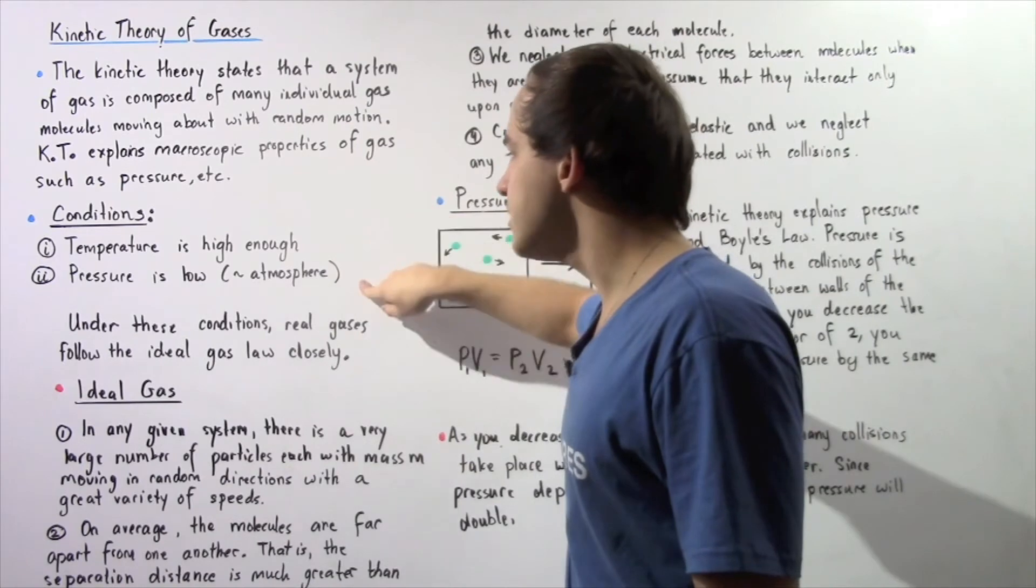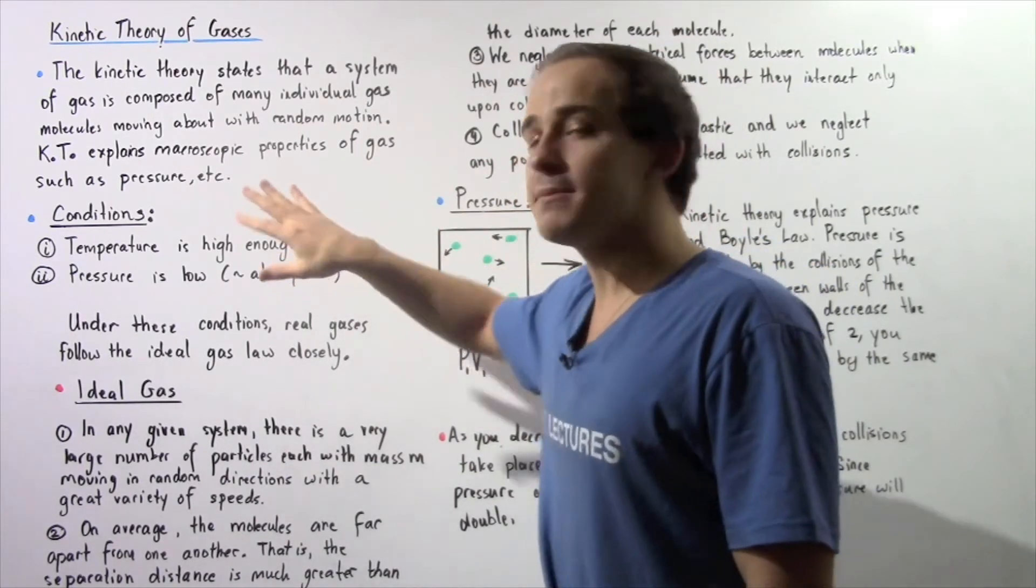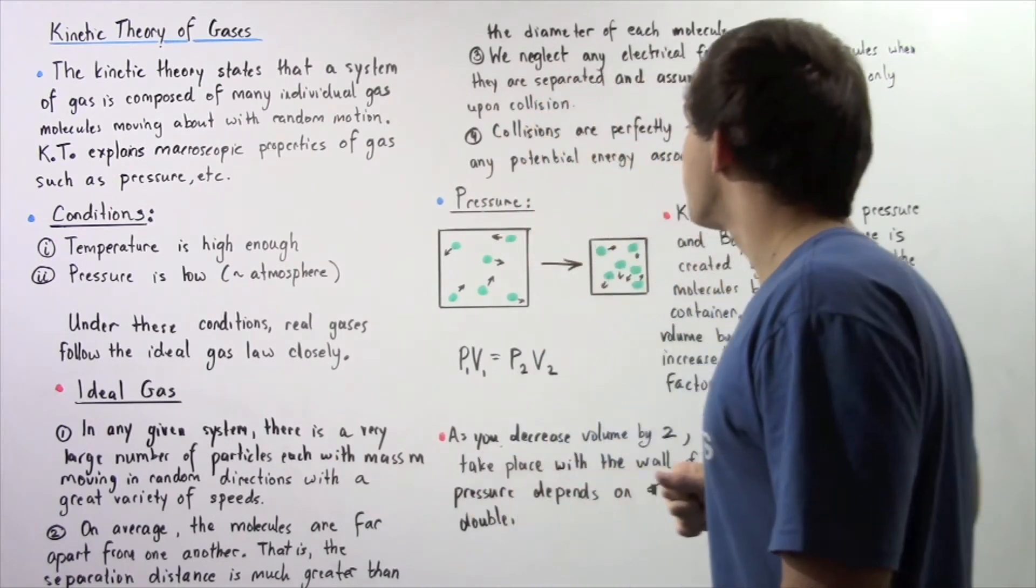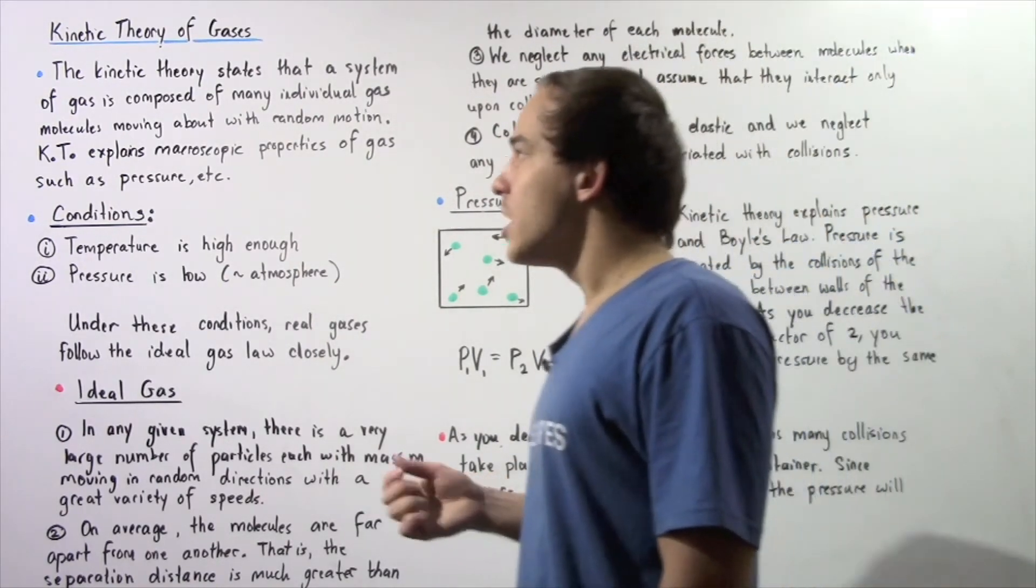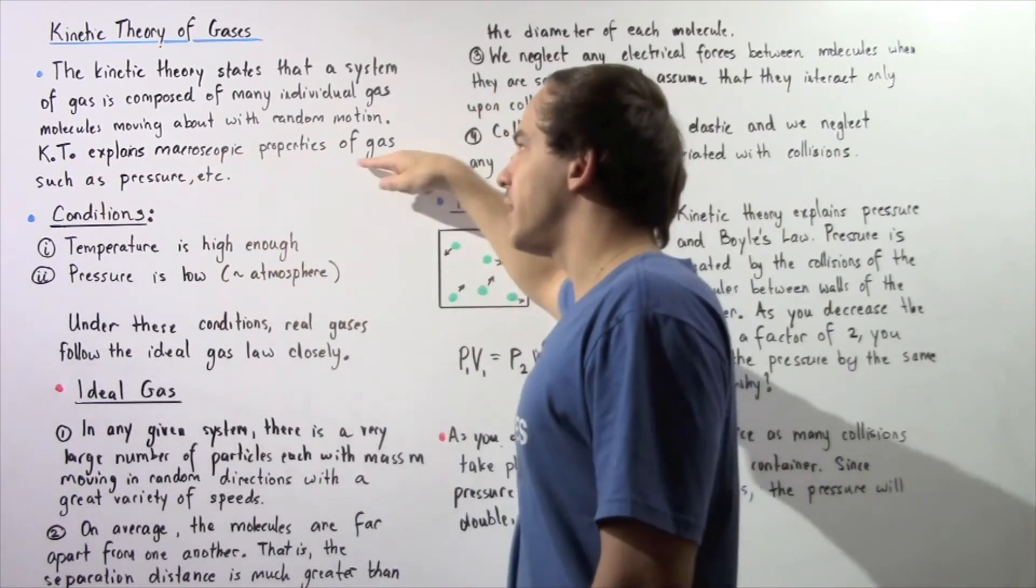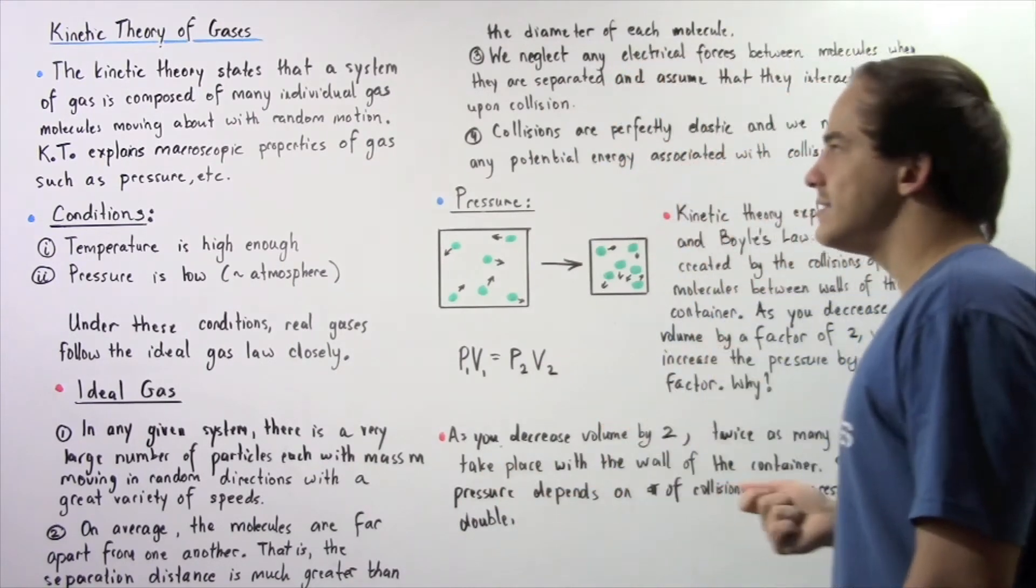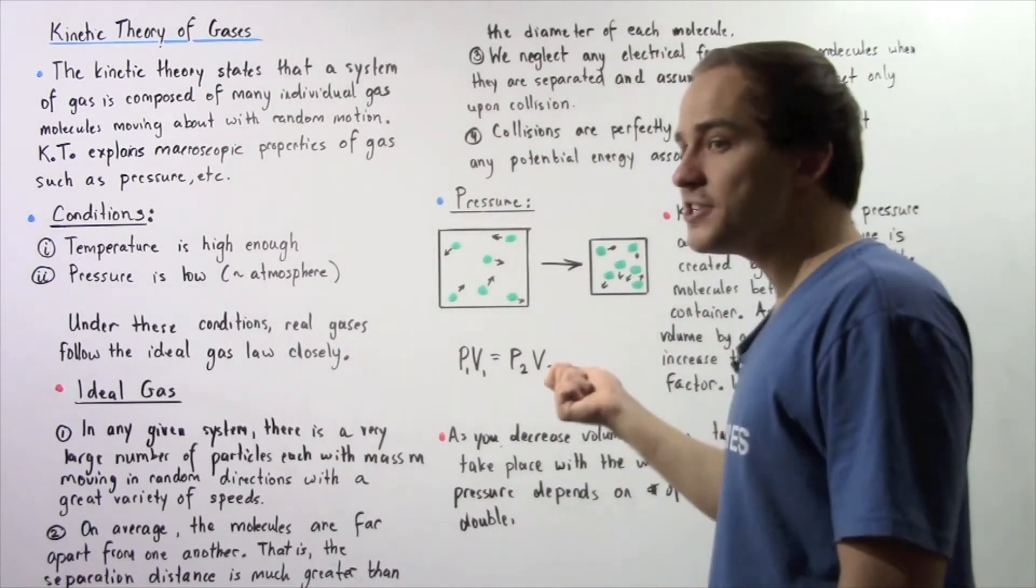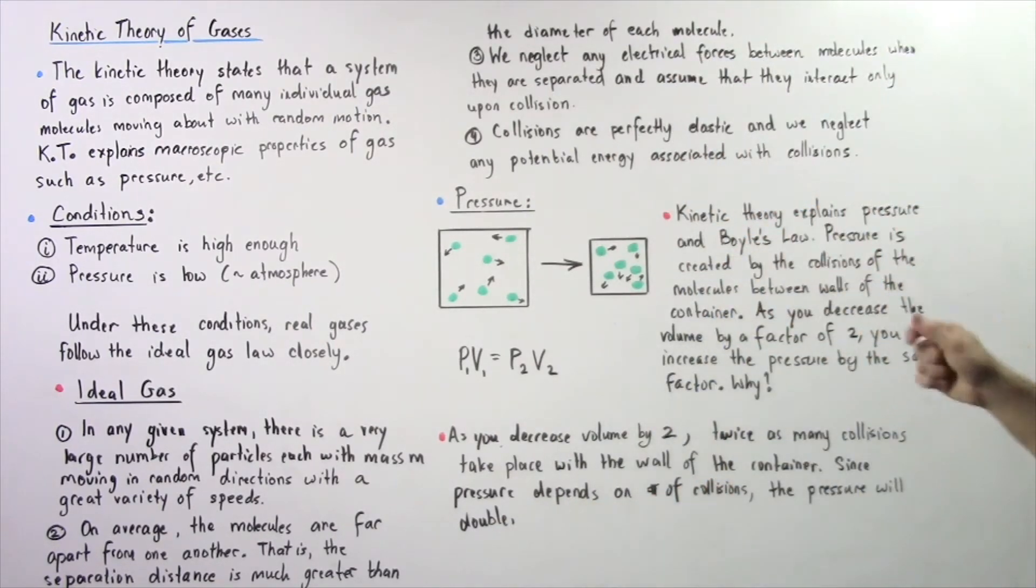And under these two conditions, we can approximate real gases as being ideal gases. Now, why is the kinetic theory of gas useful? Well it's useful because it helps explain a lot of different macroscopic properties. For instance, it helps explain pressure and Boyle's Law. So kinetic theory explains pressure and Boyle's Law.